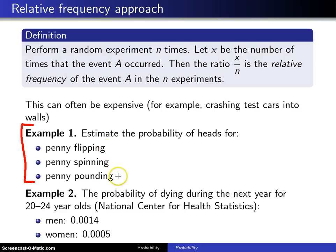A third way of doing this experiment is known as penny pounding: you put the penny on a very flat surface on edge, balance it, and then pound the table. When you pound the table, the penny will either fall to heads or tails, and you can estimate the probability of heads from that.